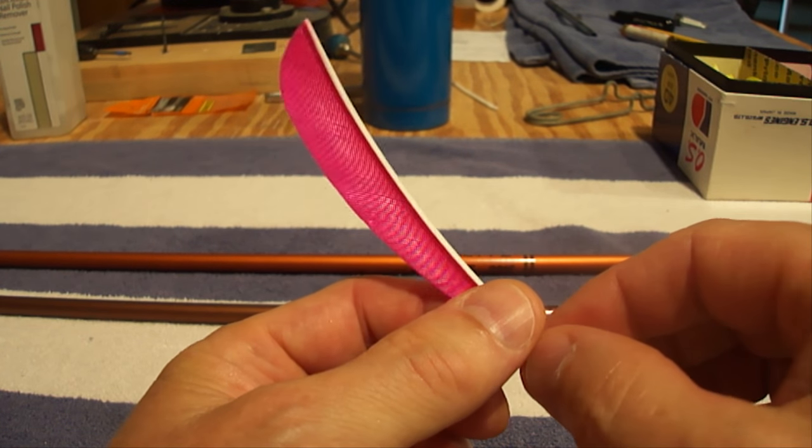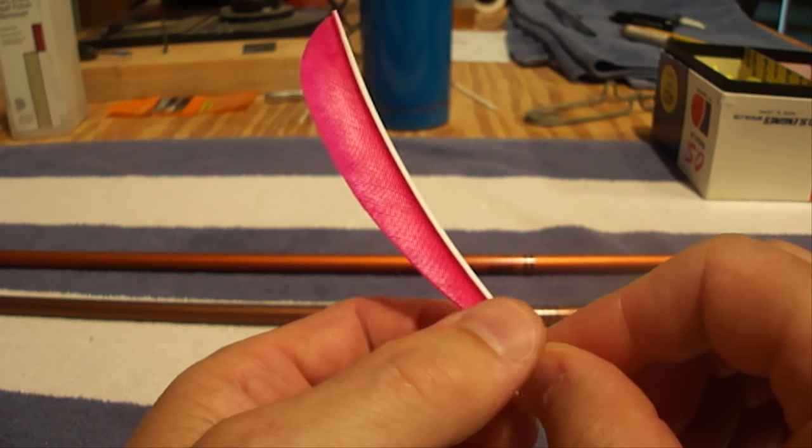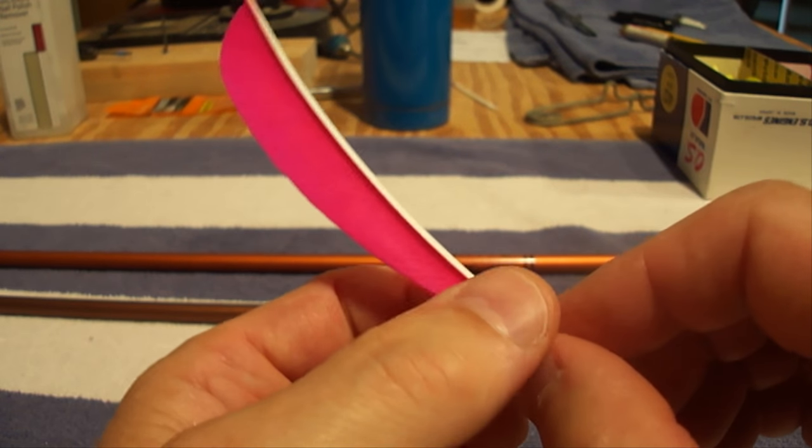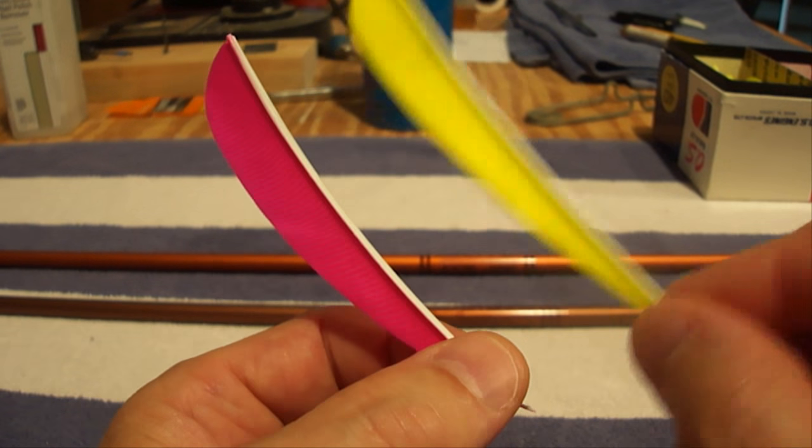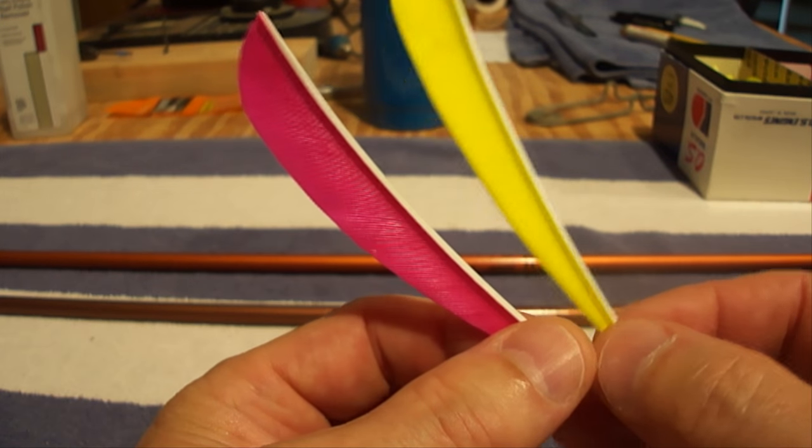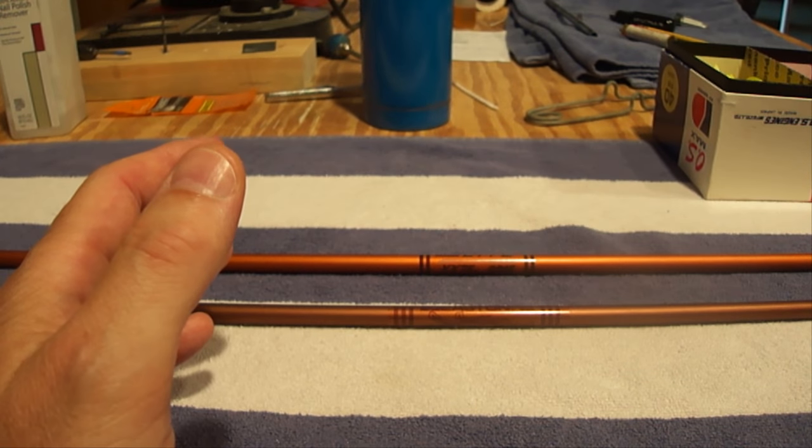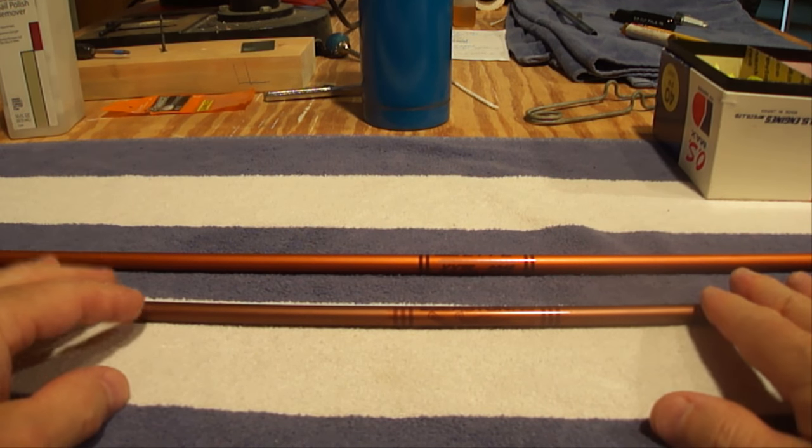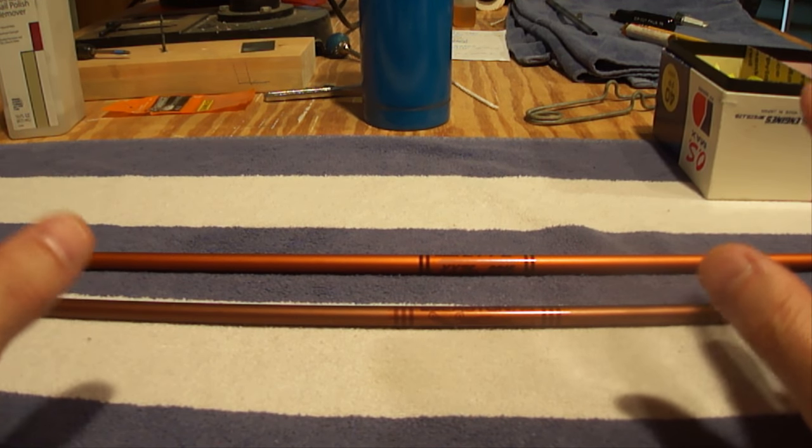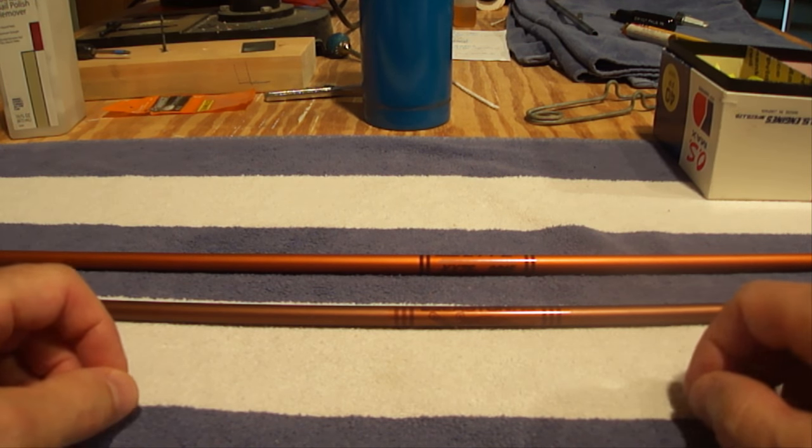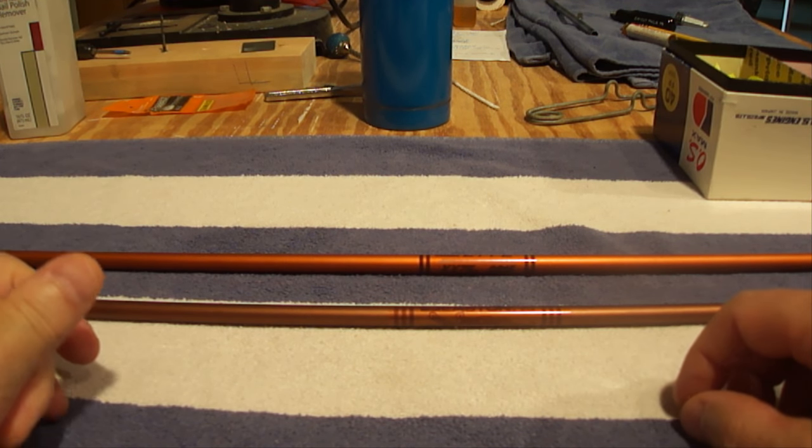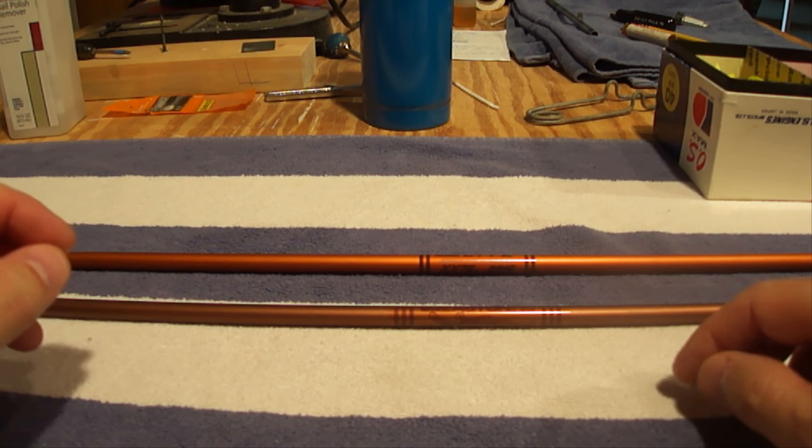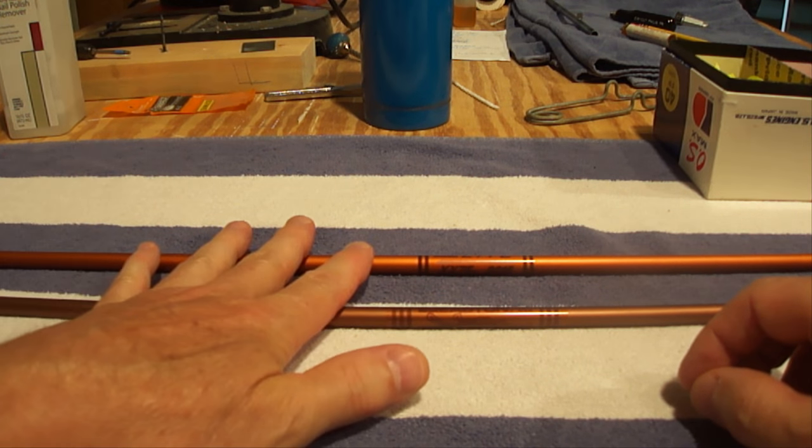When I do my crossbow arrows, I'll put three of these on it. And when I do my compound bow arrows, I'll put two of these hot pinks on and one of the iridescent because I need a cock feather. That's just some of the advantages of being able to make your own arrows up. It saves me money and time not having to rely on a bow shop to make them for me. Plus if I make them, I know they're done right.